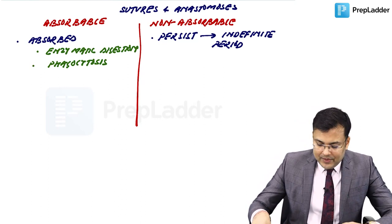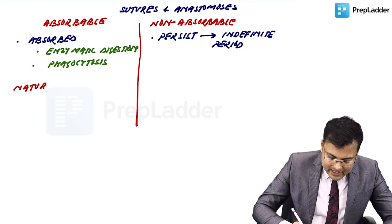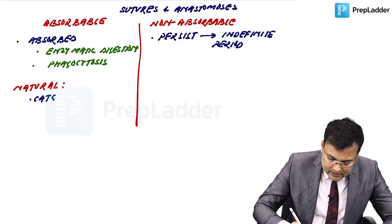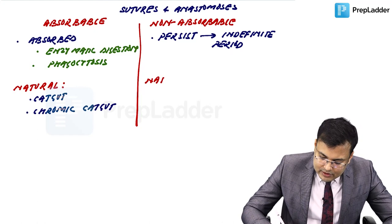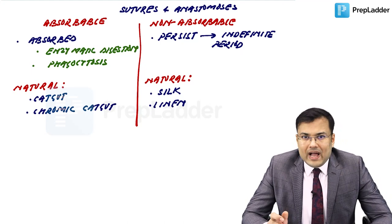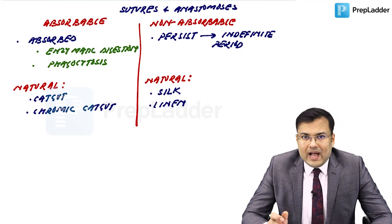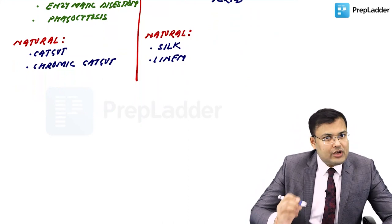Natural non-absorbable sutures are silk and linen. Synthetic absorbable sutures include polyglycaprone, polydioxanone, vicryl (y-cryl), and dexin. Synthetic non-absorbable sutures include proline, ethylon, and nylon. This list is important because it is frequently asked, so you have to remember synthetic absorbable and synthetic non-absorbable sutures.